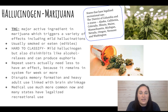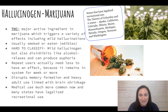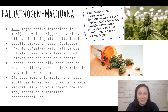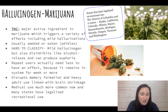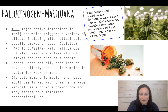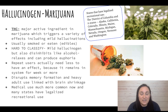Our last drug is marijuana. The naturally occurring ingredient that produces the high is THC, which triggers mild hallucinations. Marijuana is classified as a hallucinogen but really functions as multiple things — it also produces euphoria and relaxation. Repeat users actually need less of it because THC stays in the system much longer, even though they're not feeling high for longer. Many states have legalized it for medical and recreational use — currently 11 states for recreational use.